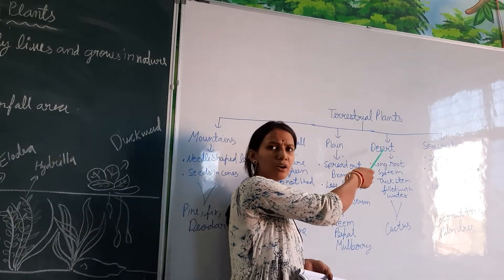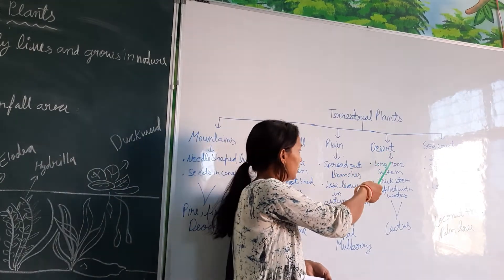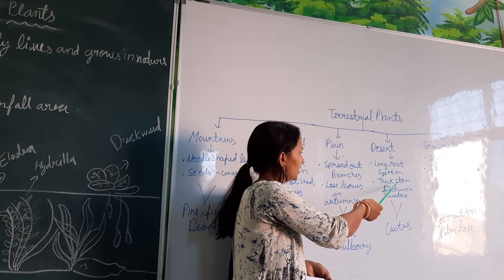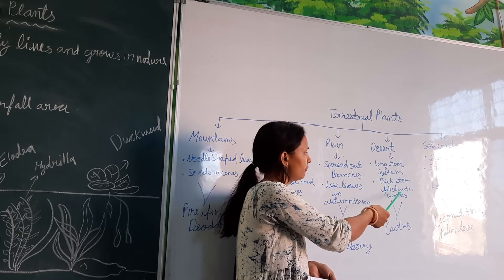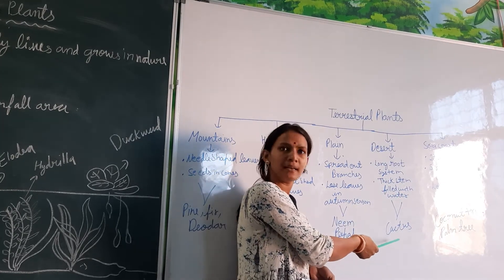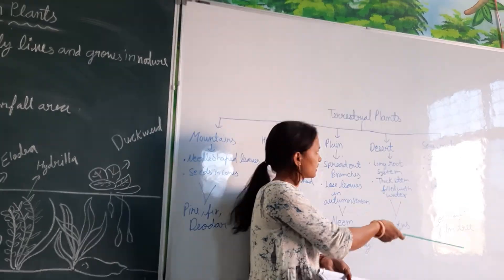Next is plants grown in the desert. They have a long, thick stem filled with water. An example is cactus.